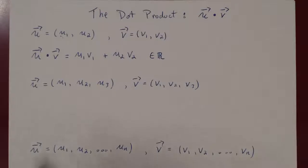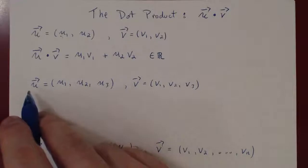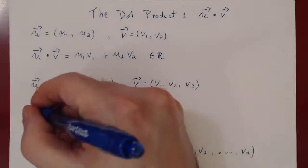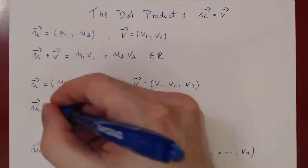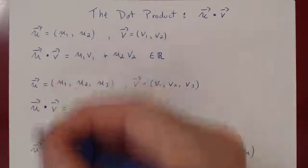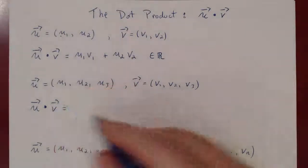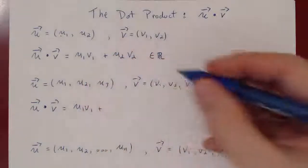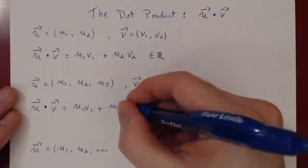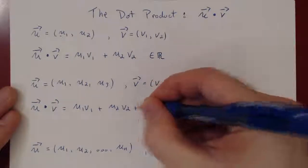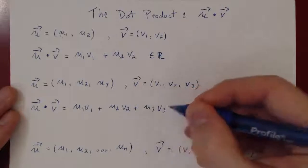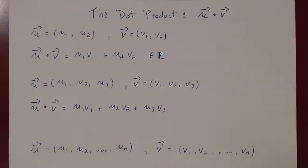Every time you were multiplying matrices, geometry took place — you just weren't aware of it. Of course, if you have vectors in R3 with three components, it's naturally the same thing. You find u dotted with v by doing u1 times v1, plus u2 times v2, plus the third entry of u times the third entry of v. Once again, all we did was multiply corresponding entries and add them up.